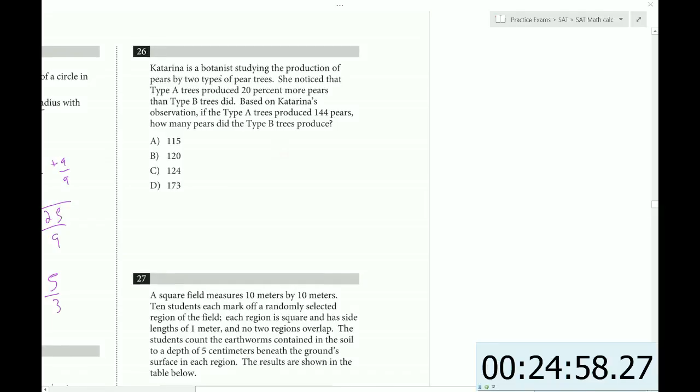Katrina is a botanist studying the production of pears by two types of pear trees. She notices that type A trees produce 20% more. 20% more is multiplier 1.2 than type B trees did. Based on Katrina's observation, if the type A trees produced 144. So let's start by making an equation here. Type A trees produced 20% more than type B. Type A is 144, so that we could plug that in. And then we could solve for B by dividing by 1.2. 1.2 is kind of like 12. So you can take 144 and make it 12 times 12. And then divide one of those 12s by 1.2. It's 10 times larger. So that ends up being equal to 120.